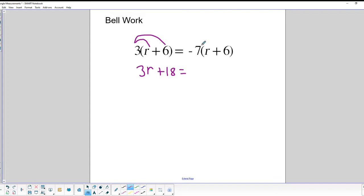Then we move on to the other side, so we've got negative 7 times R and negative 7 times 6. Negative times a positive is a negative, so we'll have negative 7R, and negative 7 times positive 6 would be negative 42.